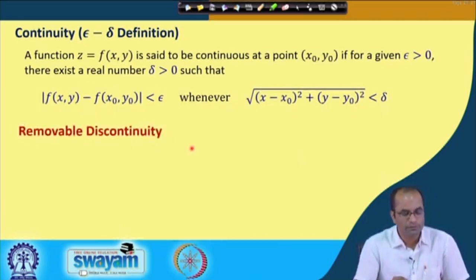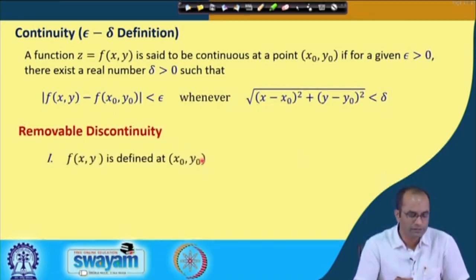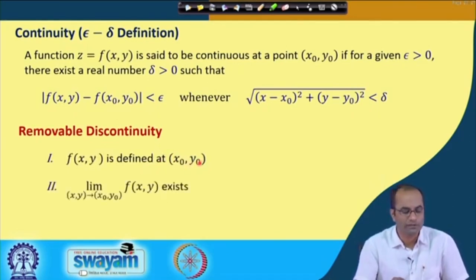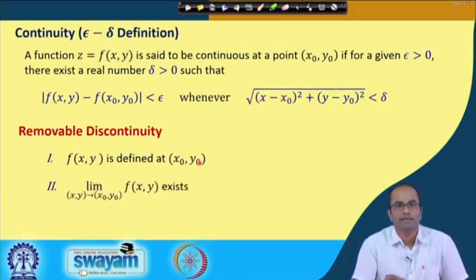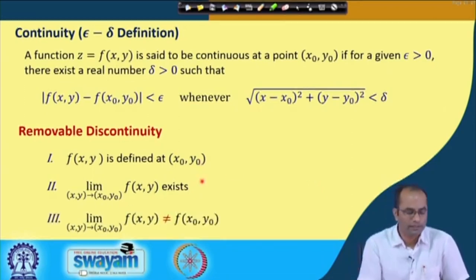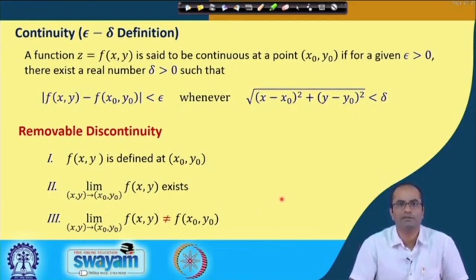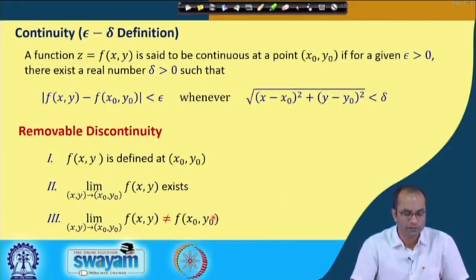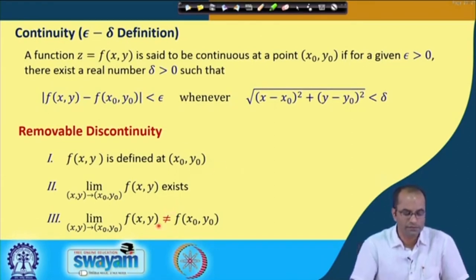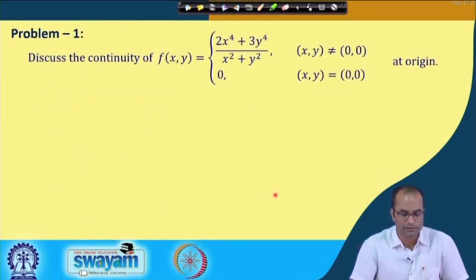There is another term we use: removable discontinuity. If the function is defined at (x₀, y₀) and the limit exists, but the limit is not equal to the function value at that point, then we call that a removable discontinuity. If the limit does equal the function value, that is the definition of continuity.